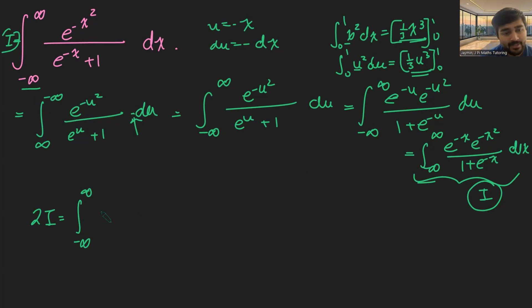And if I add these two integrals up, I get e to the minus x squared plus e to the minus x times e to the minus x squared, all over e to the minus x plus 1 dx.